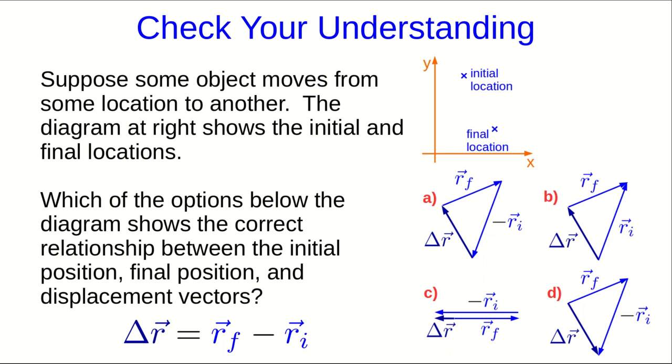Notice the delta r vector points from the initial location to the final location, and it should appear in the picture. There's only one option, d, which shows a delta r vector pointing in that direction. So already it looks like it has to be that one. Let's check the other two vectors.